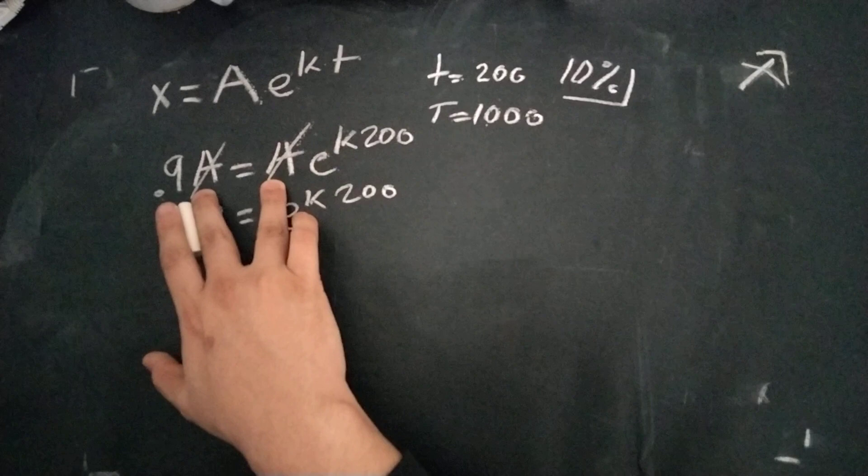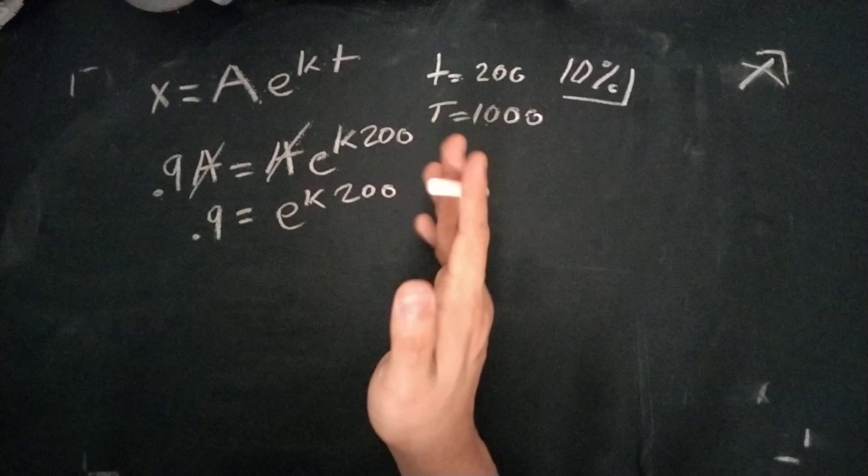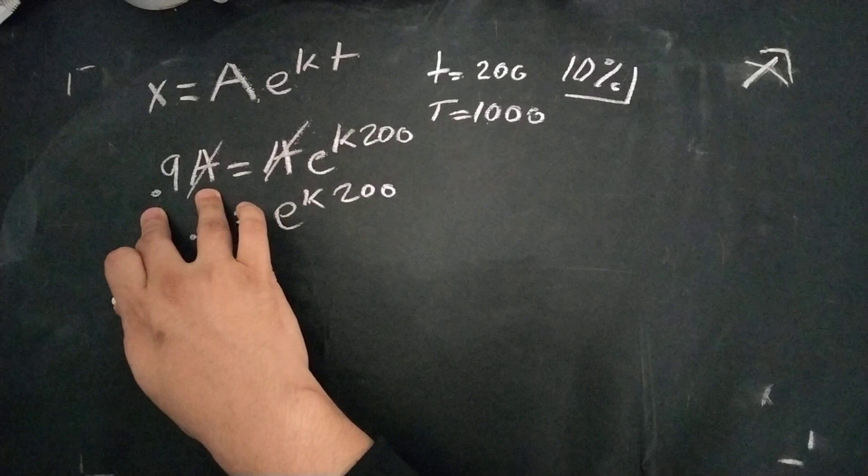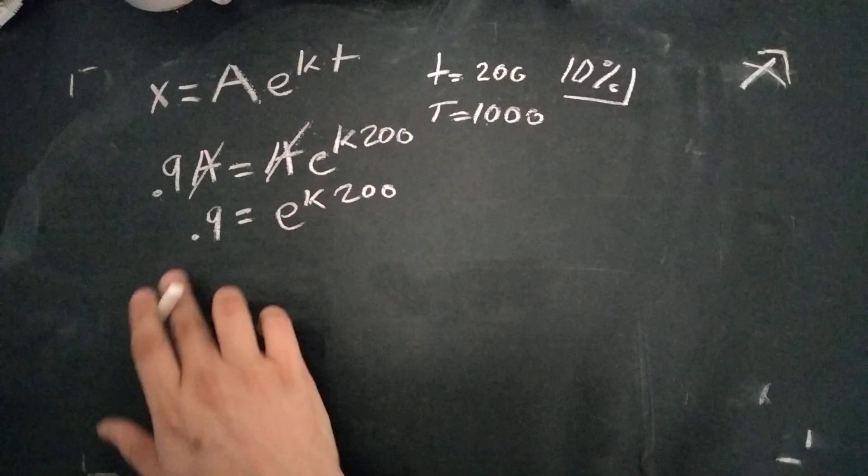And in case you're wondering here why this is the case. This solves for how much is left as a whole value. But if you know what percentage is left, then it's just a percentage of this value, A. So you can write it in this formula and it makes it much simpler. The A's just cancel out.